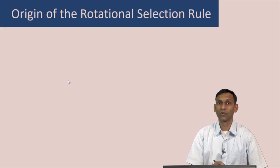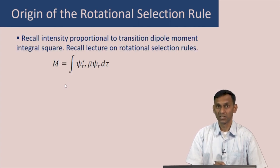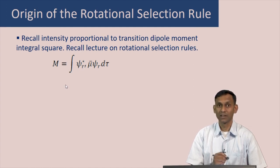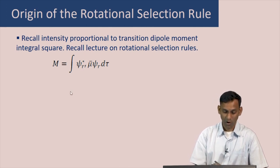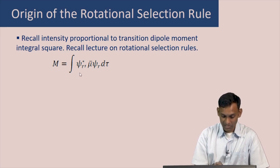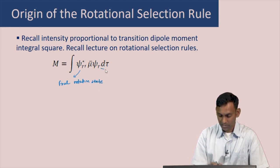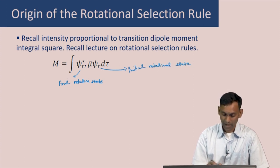In this lecture, we will discuss the origin of the rotational selection rule. You will recall that the intensity of a transition is proportional to the square of the transition dipole moment integral. In an earlier lecture on rotational spectroscopy, the intensity of a rotational transition depends on the rotational transition dipole moment integral, where psi r prime is the final rotational state, psi r is the initial rotational state, and mu is the dipole moment of the molecule.